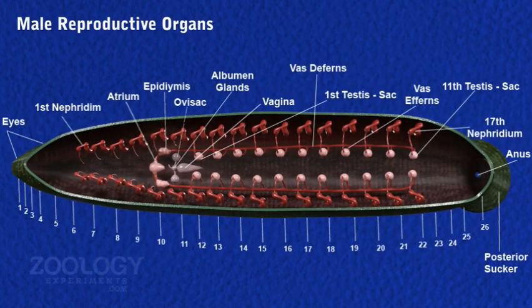Male Reproductive Organs: Male reproductive organs are testes, vasa afferentia, vasa deferentia, epididymis, ejaculatory ducts, and atrium.